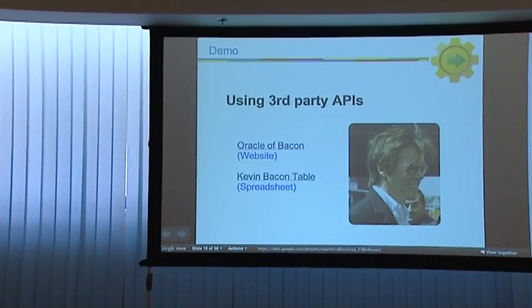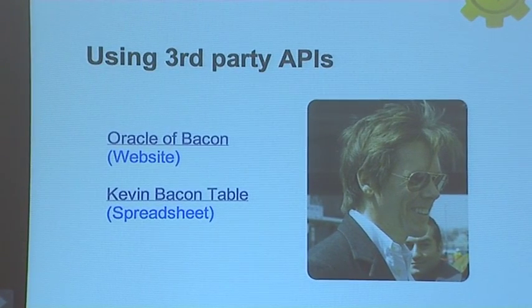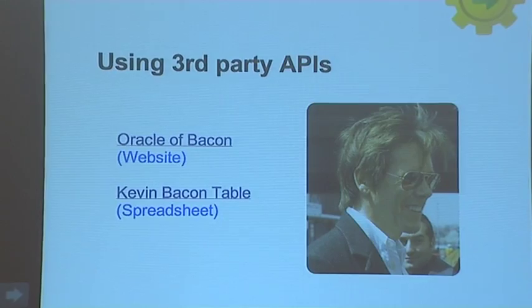Now let's do some cooler demos. The first one is how to use third-party APIs. Does everybody know Kevin Bacon? He was the bad guy in the latest X-Men movie — French, wearing a white suit. He was even the invisible man in Hollow Man. Kevin Bacon is a very prolific actor who played in approximately 72 movies.